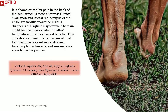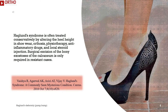Haglund's Syndrome is characterized by pain in the back of the heel, which is more pronounced after rest. Clinical evaluation and lateral radiographs of the ankle are mostly enough to make a diagnosis. The pain could be due to associated Achilles tendonitis and retrocalcaneal bursitis. This condition can mimic other causes of hind foot pain like isolated retrocalcaneal bursitis, plantar fasciitis, and seronegative spondyloarthropathies. Haglund's Syndrome is often treated conservatively by altering the heel height in shoe wear, orthosis, physiotherapy, and anti-inflammatory drugs.